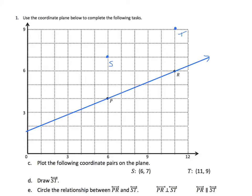So let's now draw our line. We'll finish up this task by putting the arrows on both ends. And now we are asked the relationship between those two. So circle the relationship between PR and ST.